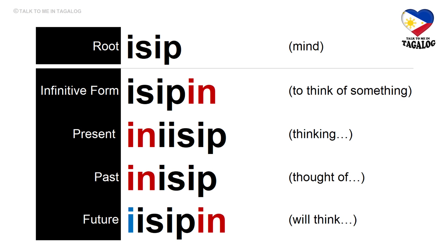Root word: isip — meaning mind. Infinitive form: isipin — to think of something. Present tense: iniisip — thinking of something. Past tense: inisip — thought of something. Future tense: iisipin — will think of something.